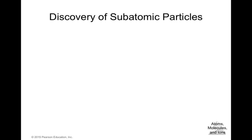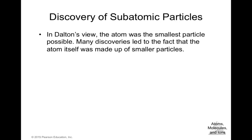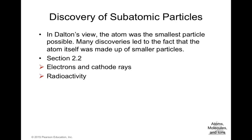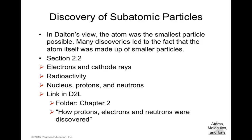The atom has three important subatomic particles. In Dalton's view, the atom was the smallest particle possible, but many discoveries led to the finding that atoms themselves are made up of smaller particles. In section 2.2, you can find information about electrons and cathode rays, the nucleus, protons, and neutrons. There is also a link in the course folder for chapter 2 with a video on how protons, electrons, and neutrons were discovered — you should watch it, as exam questions may come from those experiments.